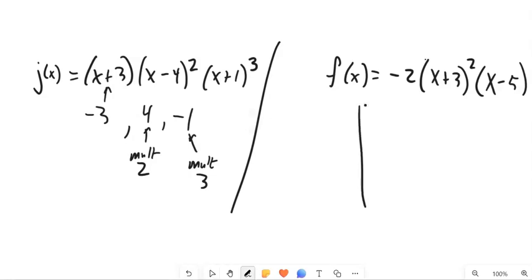We know that there's a zero at negative three. We know there's a zero at five.